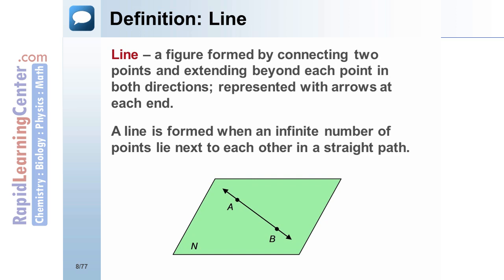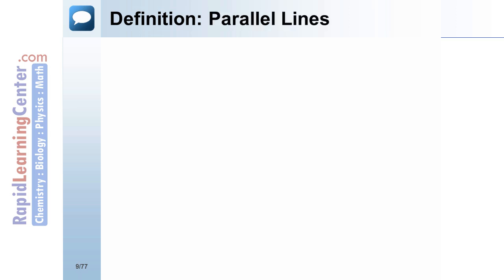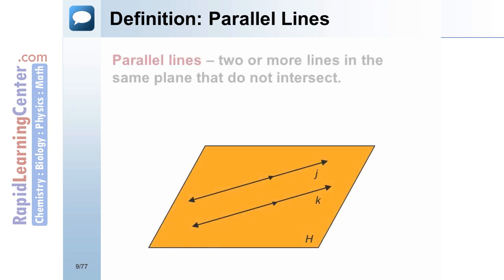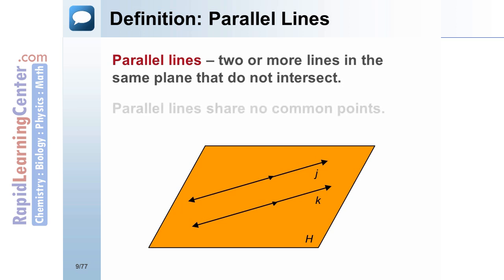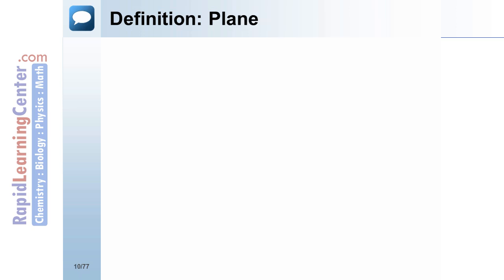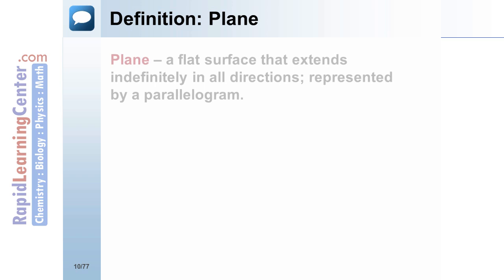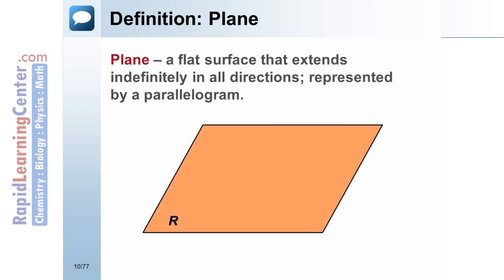Definition: Parallel Lines. Two or more lines in the same plane that do not intersect are known as parallel lines. In other words, parallel lines share no common points.